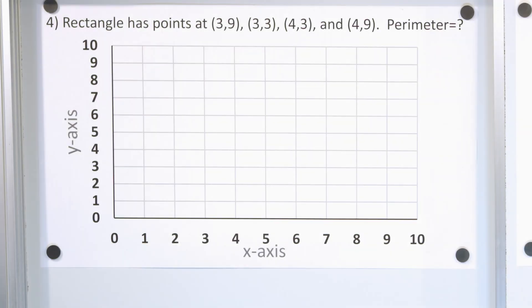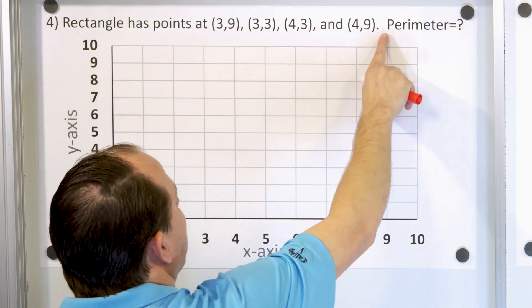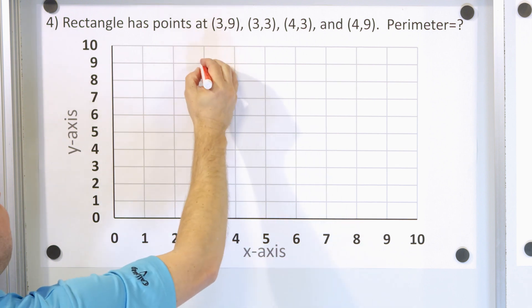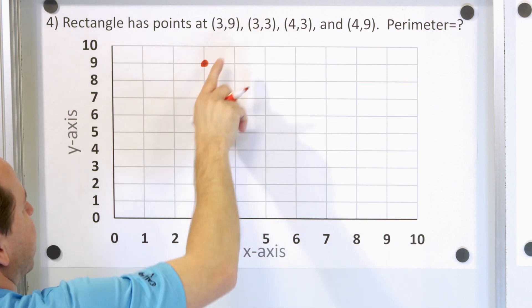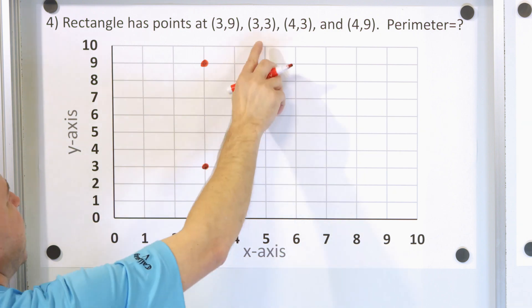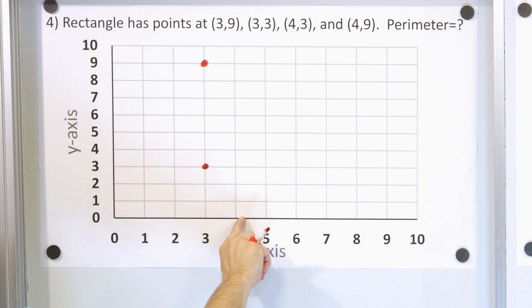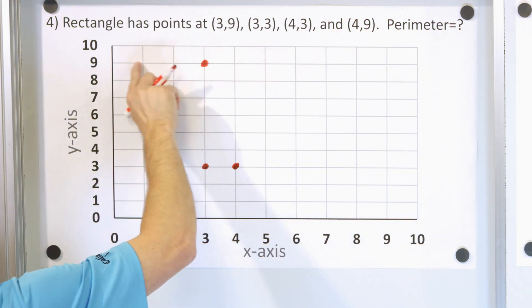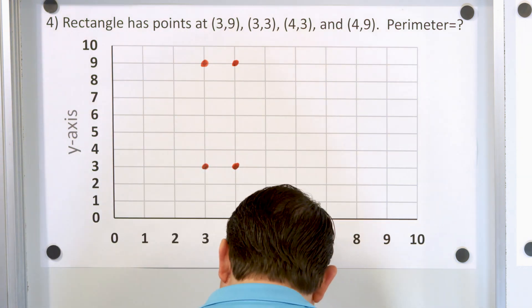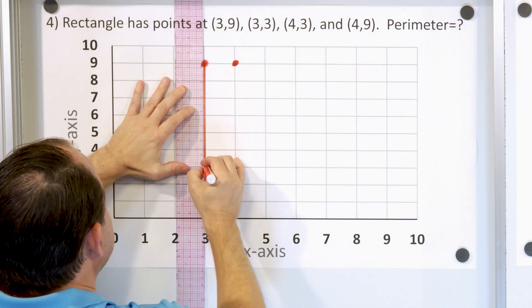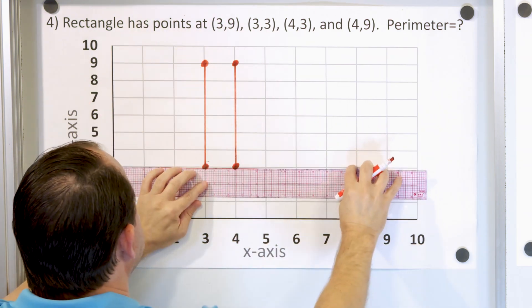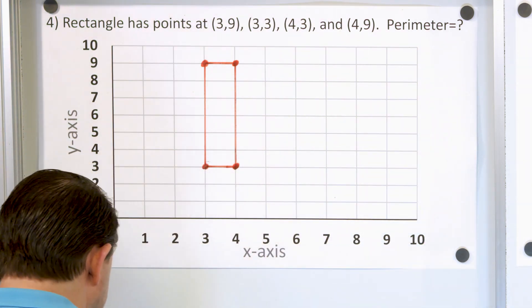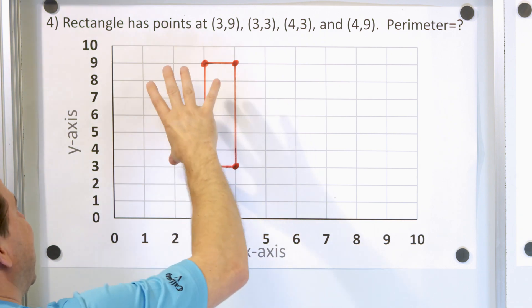Problem number four: a rectangle with points 3,9 — 3,3 — 4,3 — 4,9. Find the perimeter. Same process. X is 3, go up 9 for Y — one corner there. Then 3,3 — X is 3 and Y is 3, point goes right here. Then 4,3 — X is 4 and Y is 3, point right here. Finally 4,9 — X is 4, Y is 9 — the fourth corner is right here. Let's draw the sides neatly to form the rectangle.